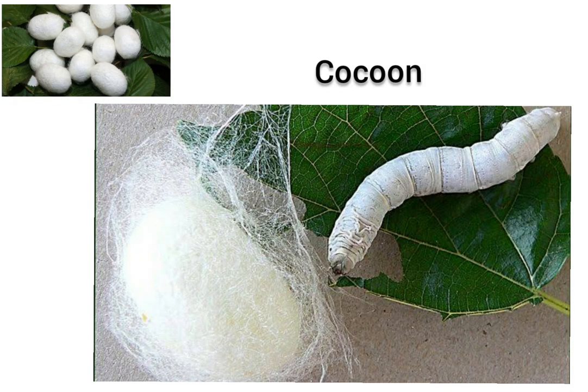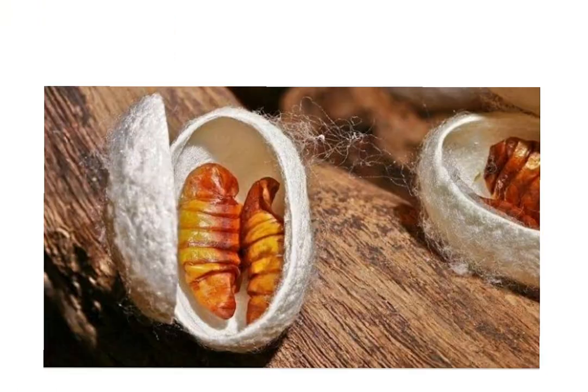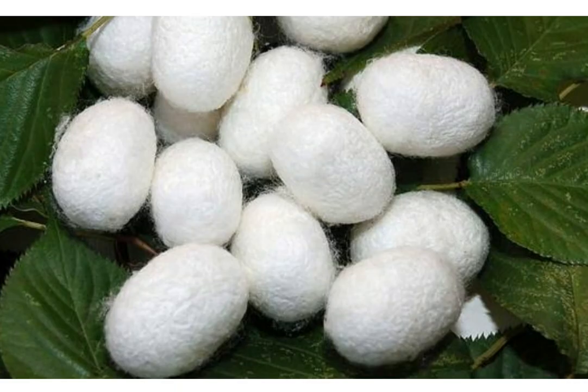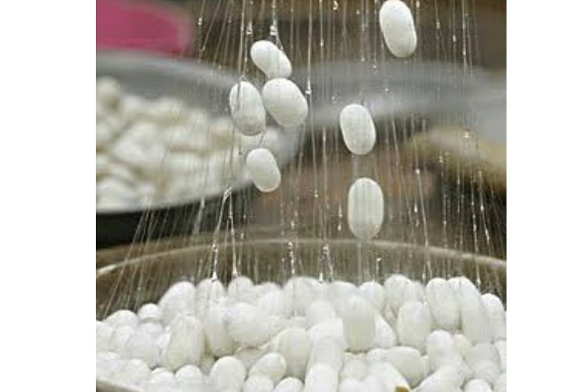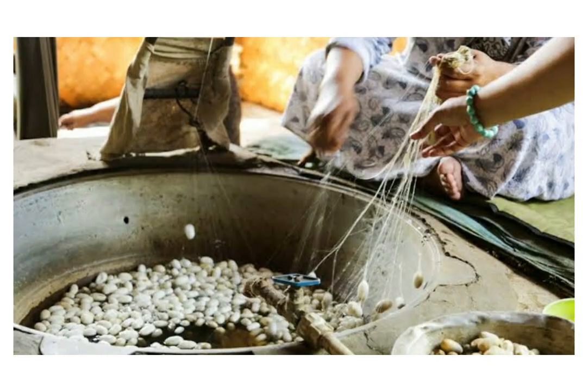A cocoon is the protective covering or envelope that the larva spins around itself. It is protection for the pupa, which is the next phase after the caterpillar phase. This cocoon is made up of silk fibers — the filamentous substance secreted by the larva is actually the silk yarn. Silk is obtained from this cocoon.